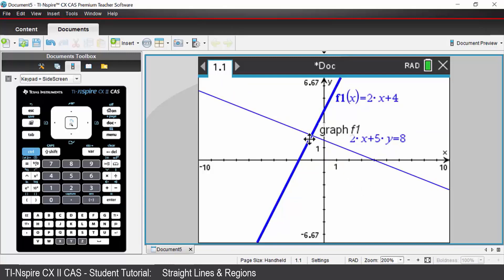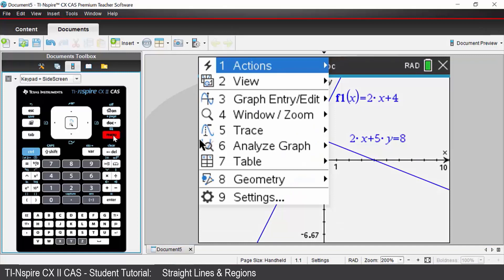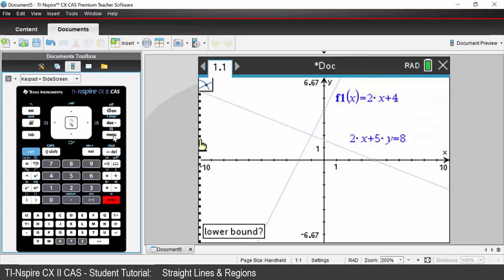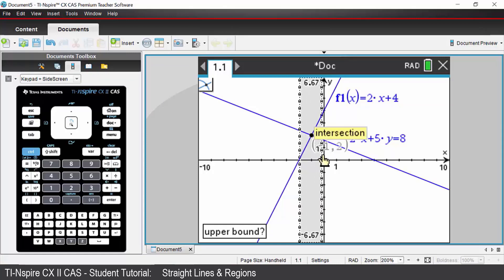If you wanted to find the intersection point of those two lines, we would press the menu key. We would come down to option 6 which is analyse graph and we're then going to choose option 4 intersection. Lower bound means you click just on the left of your intersection point. Upper bound, click just on the right, and you will get the coordinates of that intersection point.